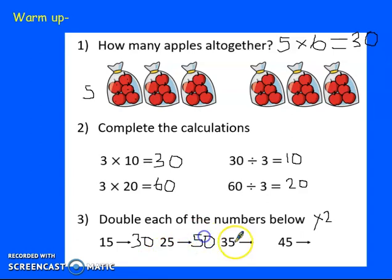Let's do it with 35. Double the 5 equals 10. Double the 30, it equals 60. 60 add 10 equals 70. And finally, 45, double the 5 equals 10. Double the 40 equals 80. Add them together, it equals 90.